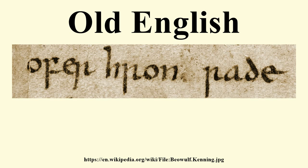Old English developed from a set of Anglo-Frisian or North Sea Germanic dialects originally spoken by Germanic tribes traditionally known as the Angles, Saxons, and Jutes. As the Anglo-Saxons became dominant in England, their language replaced the languages of Roman Britain: Common Brittonic, a Celtic language, and Latin, brought to Britain by Roman invasion.